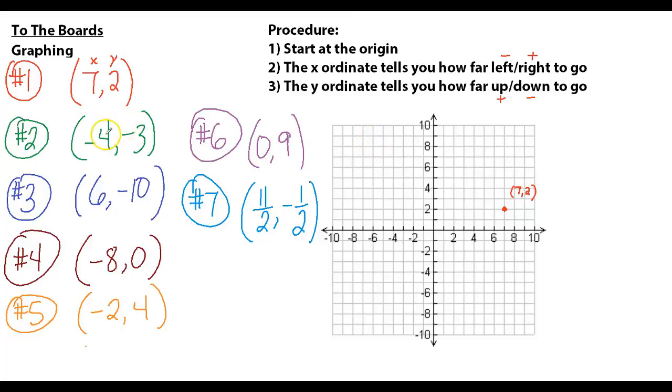Let's try the next one, negative 4, negative 3. Start at the origin at 0, 0. Negative 4 means I need to go left 4: 1 2 3 4. Then I have a negative y so I need to go down 3: 1 2 3. That is our point negative 4 comma negative 3.